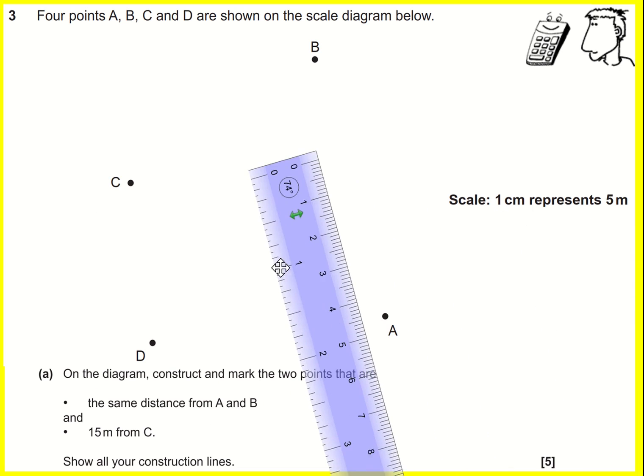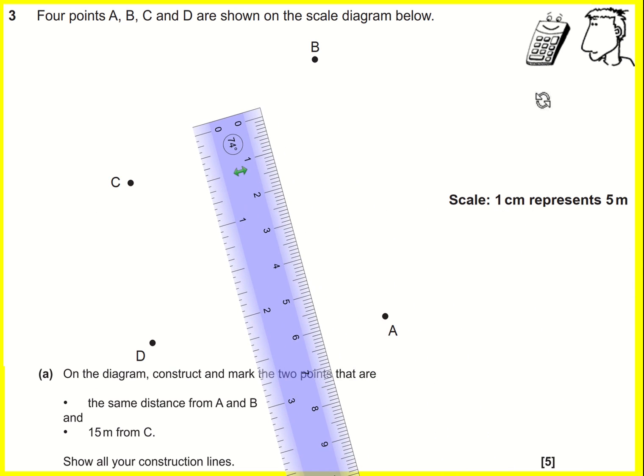Let's start with 15 meters from C. We can see that 1 centimeter represents 5 meters. That means 15 meters, well I've tripled the 5 so I'm going to triple the 1, it's going to be 3 centimeters on my diagram.